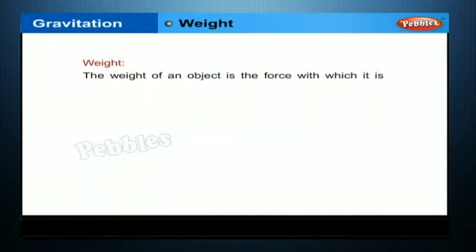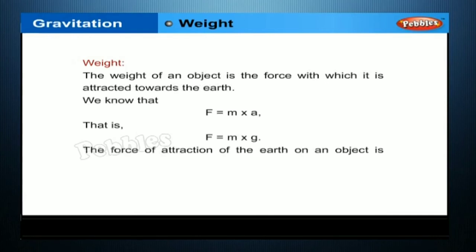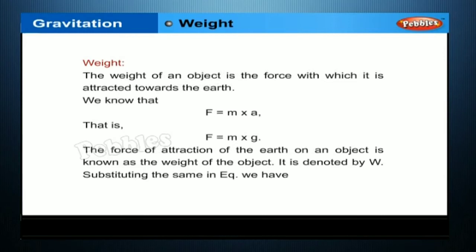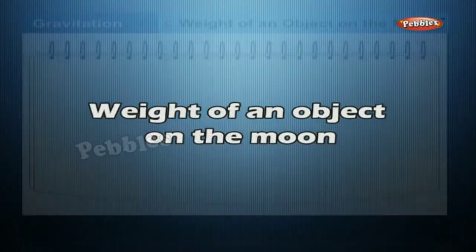Weight: the weight of an object is the force with which it is attracted towards the earth. We know that F = m × a, that is F = m × g. The force of attraction of the earth on an object is known as the weight of the object, denoted by W. Substituting in the equation, we have W = m × g.